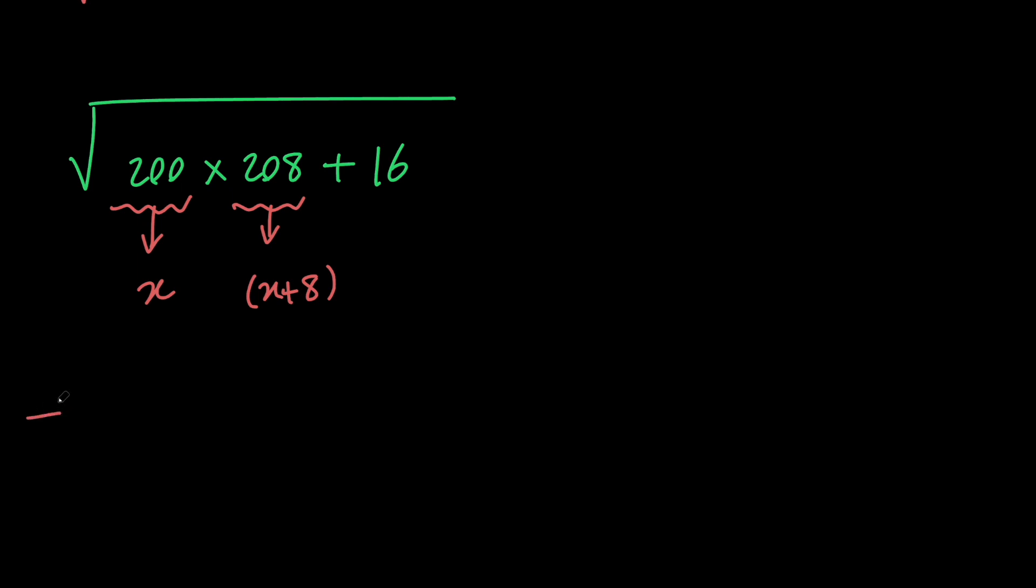So our expression is going to equal the square root of x times x plus 8 plus 16, which simplifies to the square root of x squared plus 8x plus 16.